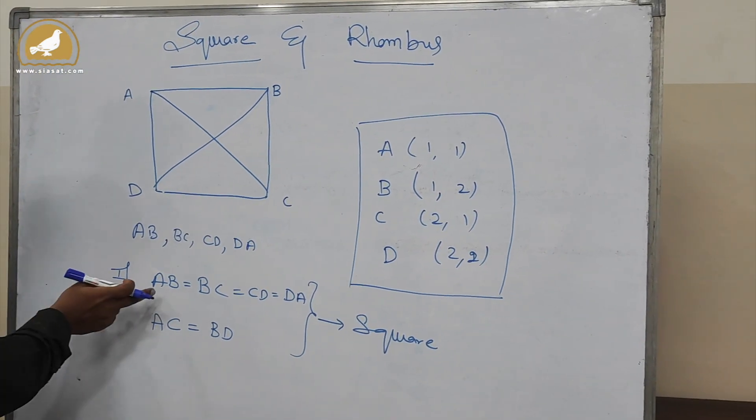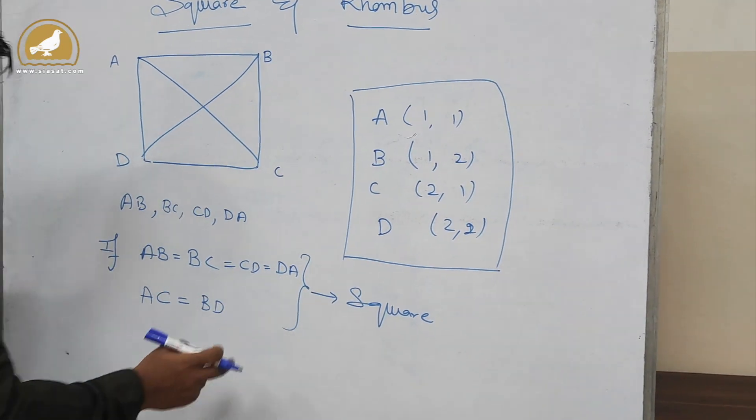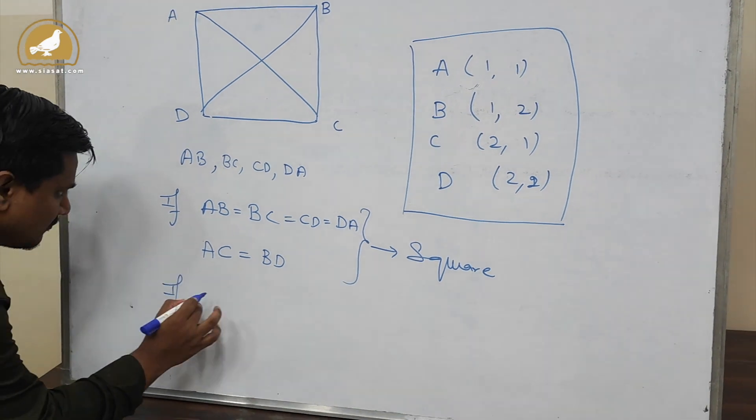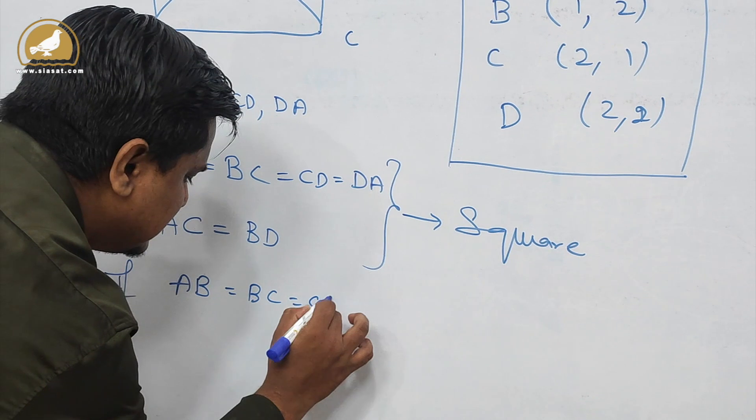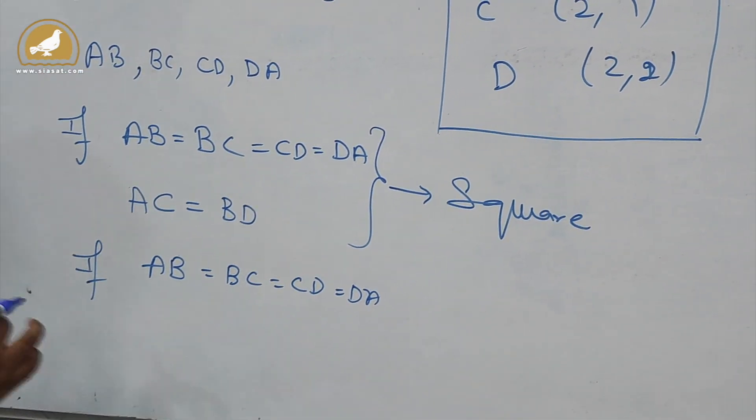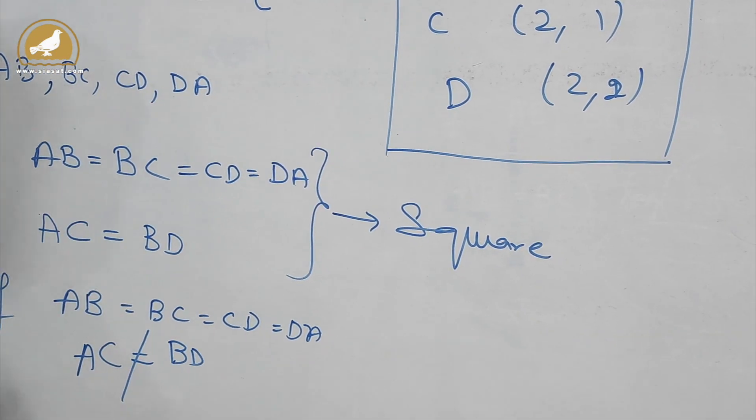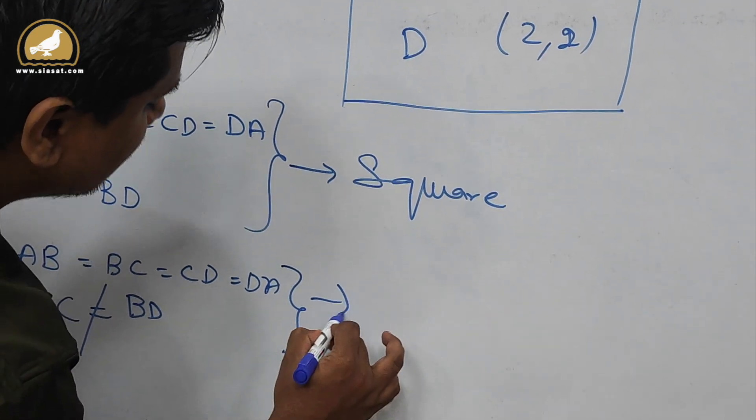But for example, we'll take another scenario: if AB is equal to BC is equal to CD is equal to DA, the first condition is satisfied, but we got AC is not equal to BD, then it is not a square.